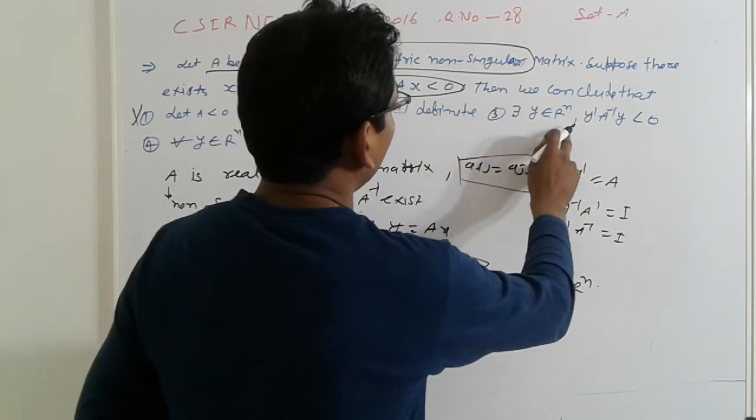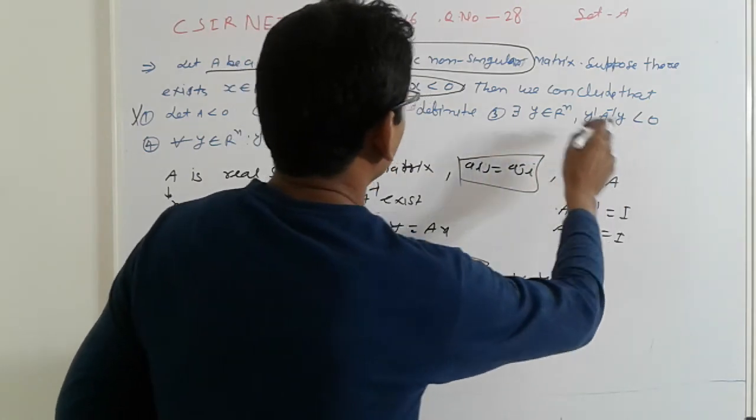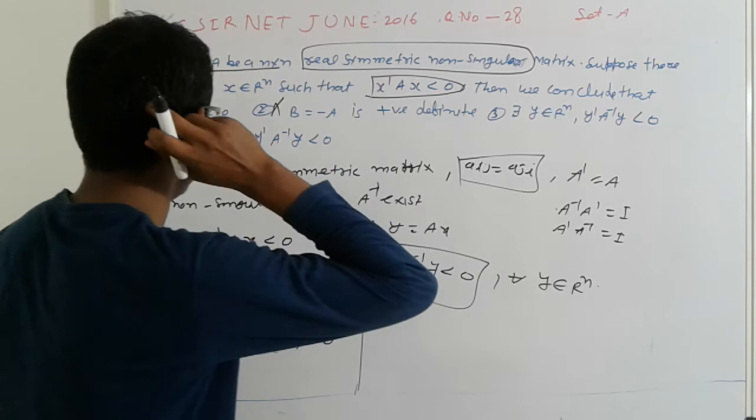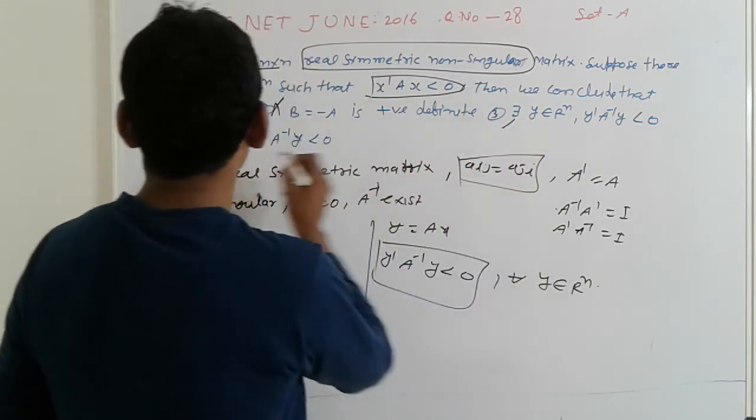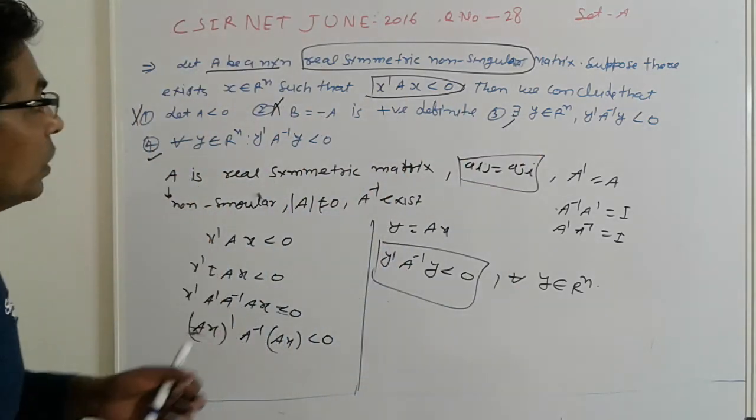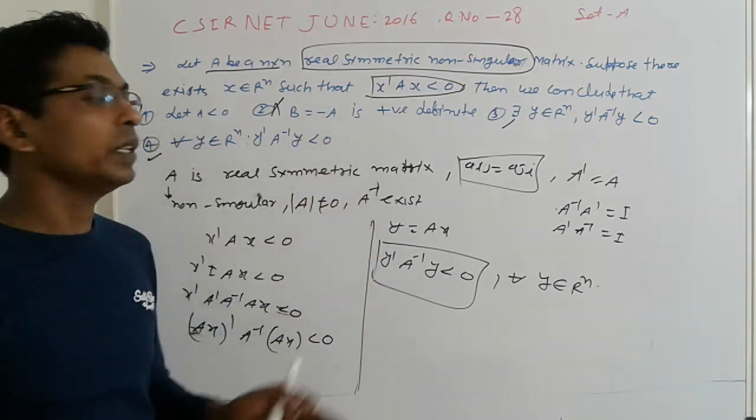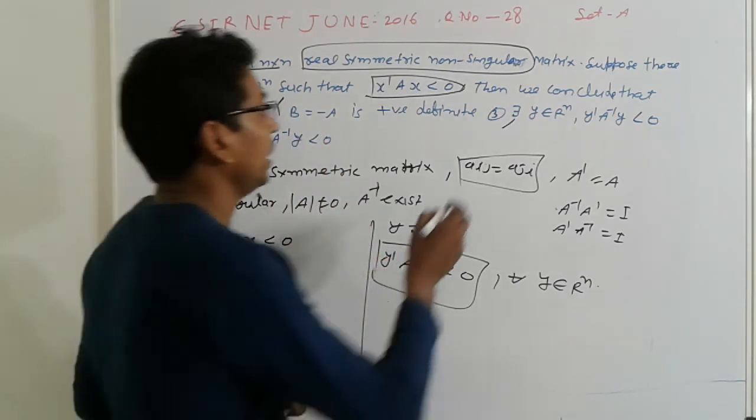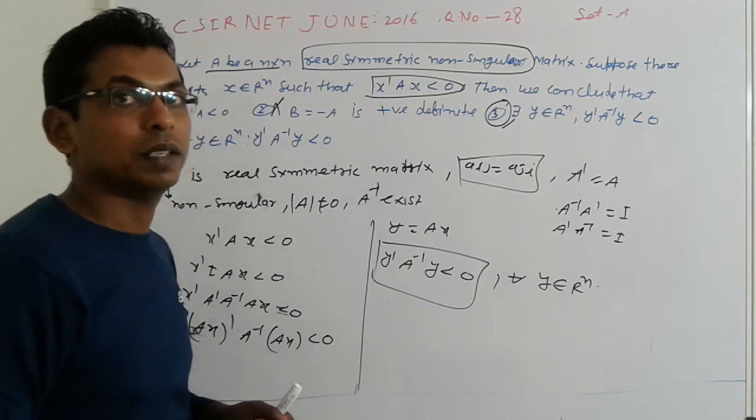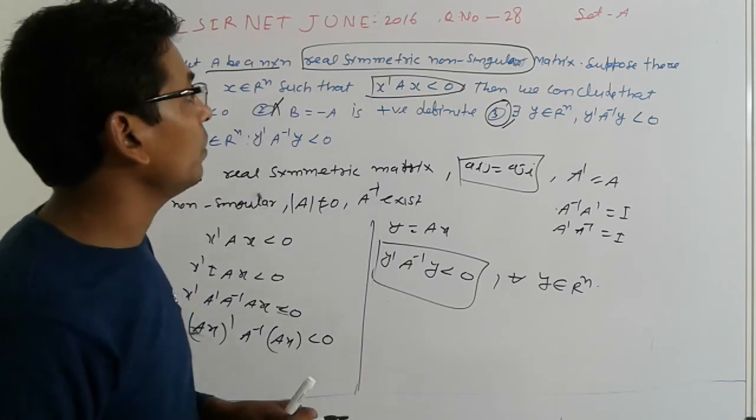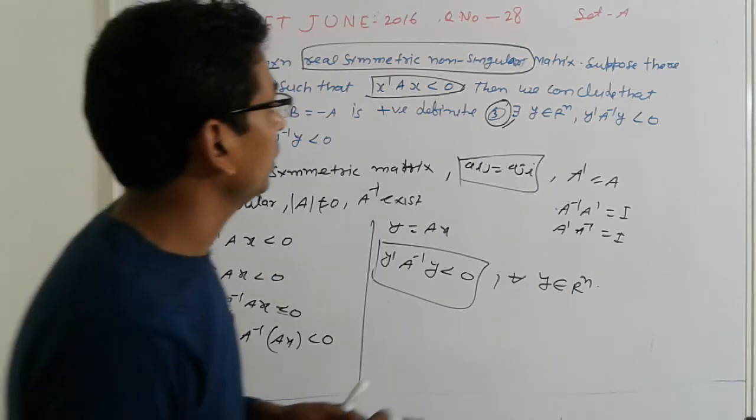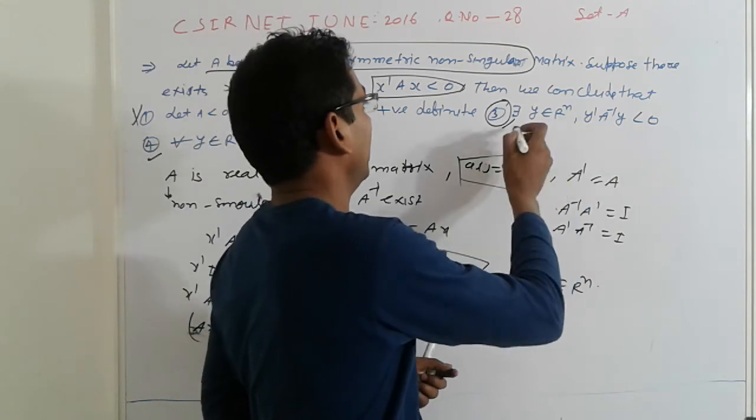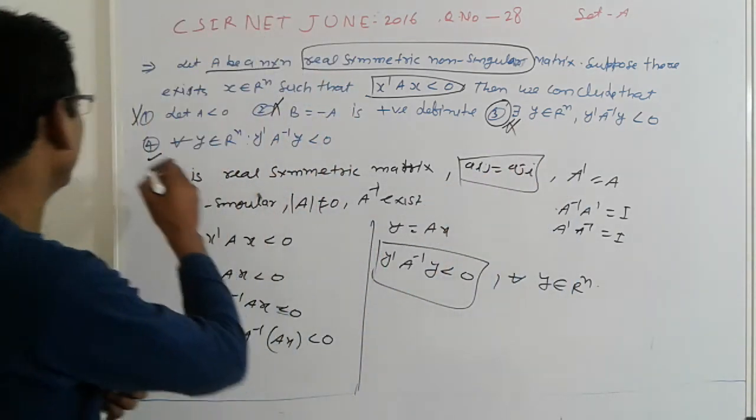There exists Y belongs to R to the n, Y transpose A inverse Y. Friends, now I have two conclusions in words. So let's take a guess that Y is not correct. There exists Y belongs to R to the n and Y transpose A inverse Y. So that is here correct.